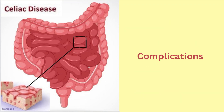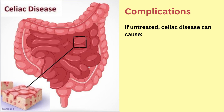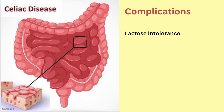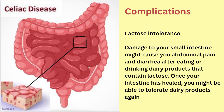Now let us discuss about the complications of this condition. If untreated, celiac disease can cause malnutrition. This occurs if your small intestine can't absorb enough nutrients. Malnutrition can lead to anemia and weight loss. In children, malnutrition can cause slow growth and short stature. The next complication is lactose intolerance. Damage to your small intestine might cause abdominal pain and diarrhea after eating or drinking dairy products that contain lactose. Once your intestine has healed, you might be able to tolerate dairy products again.